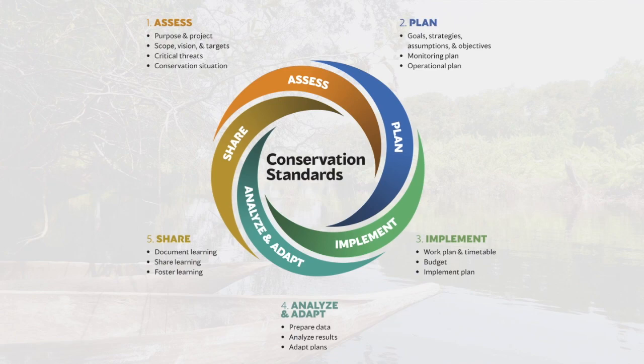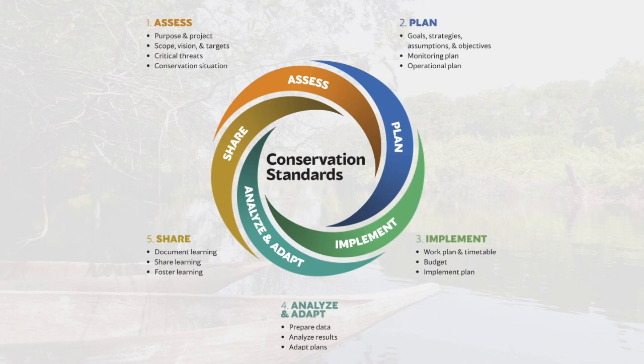If you've worked with the Open Standards in the past, you might wonder what changed and why the name changed, or why this cycle looks so different. CMP, with the support of many individuals from the Conservation Standards community, recently updated and released version 4.0 of the Open Standards for the Practice of Conservation. Recognizing a need to improve messaging and communication, CMP updated the look and feel of the cycle itself — it's much more modern, colorful, and sleek. The intention is to visually convey a long-standing principle that teams should enter the cycle at the step that makes most sense for their context.